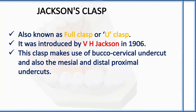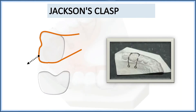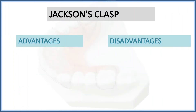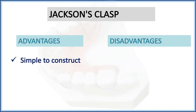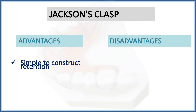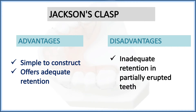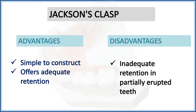The Jackson clasp is U-shaped and hence called the U-shaped clasp. One figure shows a buccal view and another shows an occlusal view. Advantages: simple to construct and offers adequate retention compared to the C clasp, as it engages mesial and distal undercuts. Disadvantage: inadequate retention in partially erupted teeth.